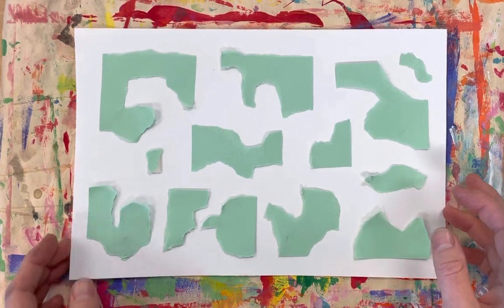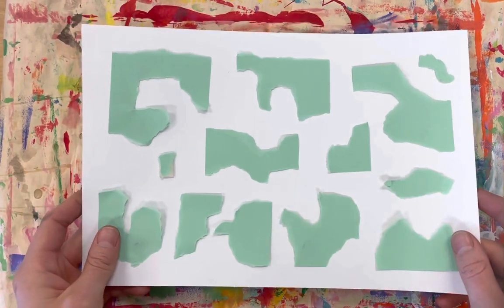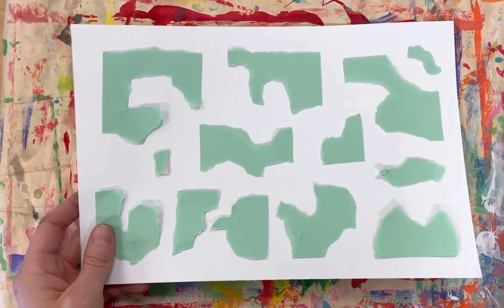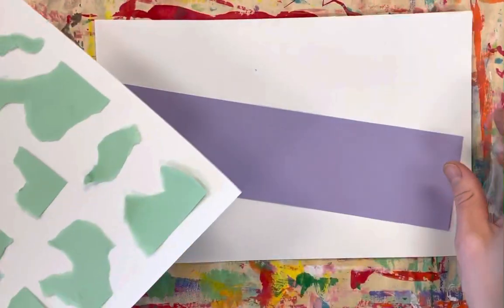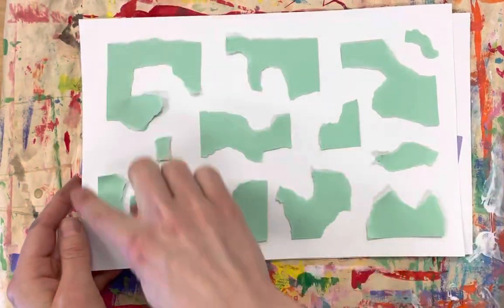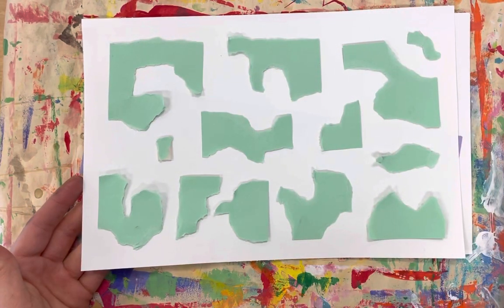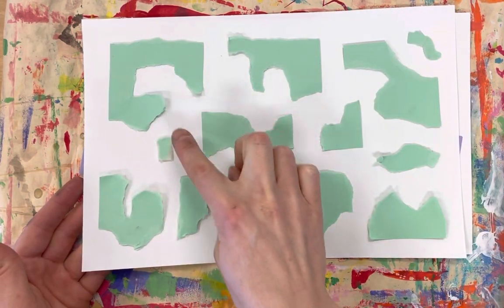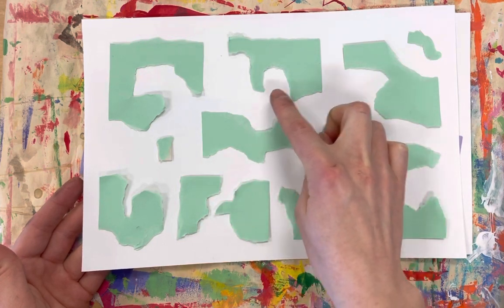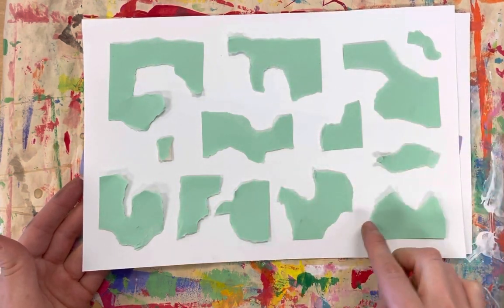Today I'm going to talk to you about how to create these shapes and attach them to your paper. Notice my shapes create an outline around the edge, and none of them are touching. They're all spaced out pretty evenly.